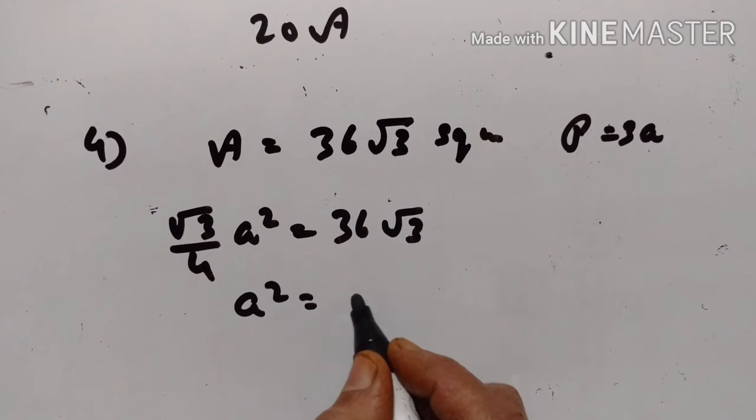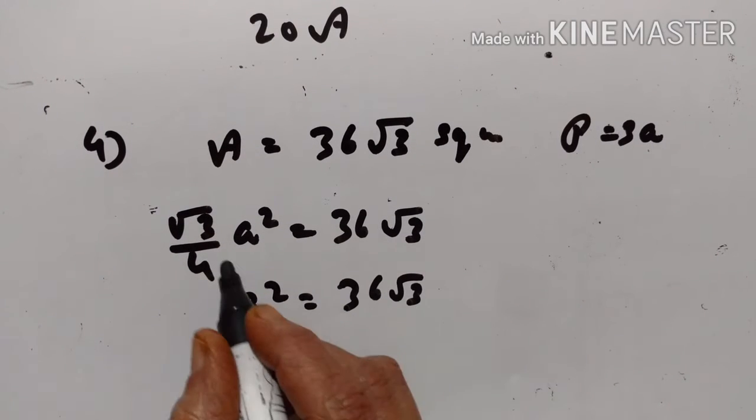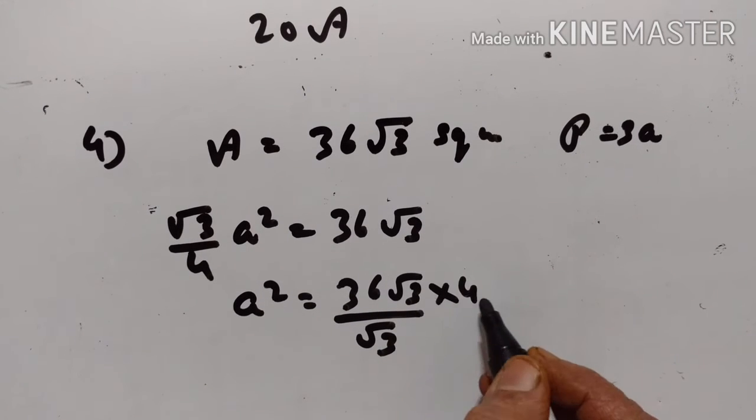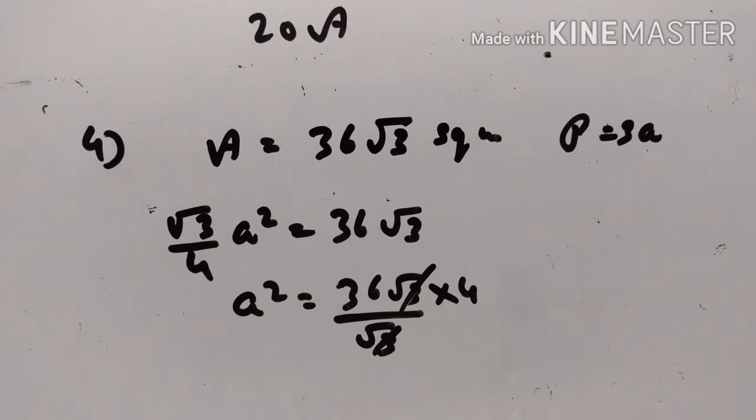A² equals 36√3. √3 goes to the denominator, 4 goes to the numerator. √3 times √3 cancels out.